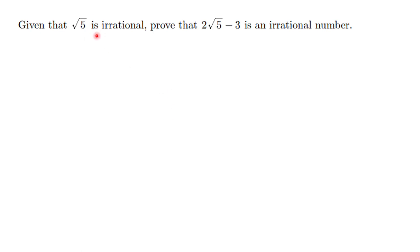So, given that root 5 is irrational, we have to prove that 2 root 5 minus 3 is an irrational number. This type of question is very simple.